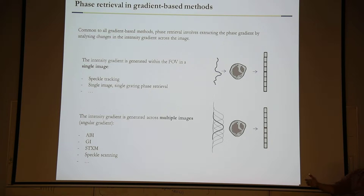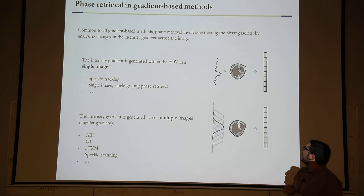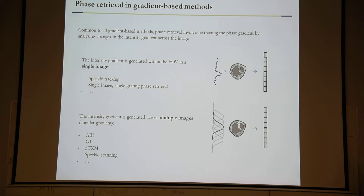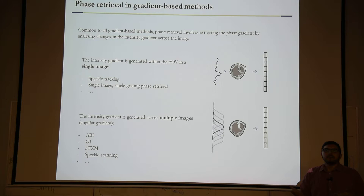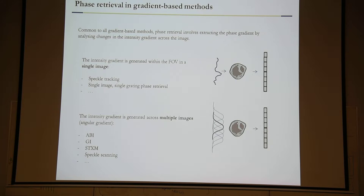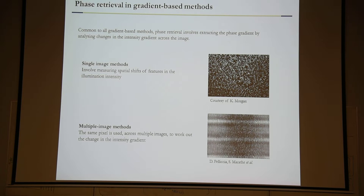Single image is something like speckle tracking, for instance, in which we have a wave field illuminating the object. We measure the wave field with and without the object, we see what effect the object has on this wave field, and from that we can work out the attenuation and the phase gradients in vertical and horizontal directions. Then we have methods that require multiple images — in this case there is some scanning involved of the sample or the optics. Typically, single image is faster, so if one needs time-resolved or low-dose imaging, single image is faster. Multiple image is more accurate, more sensitive, and gives better resolution.